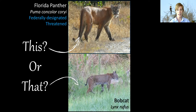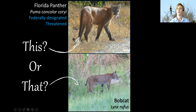Starting with the tail of the two species: the bobcat is appropriately named for its short bobtail, on average between four and six inches, compared to the very long tail of the Florida panther, which is between 20 and 30 inches — sometimes over two feet in length. The tail of the bobcat is also striped, which is something to note.